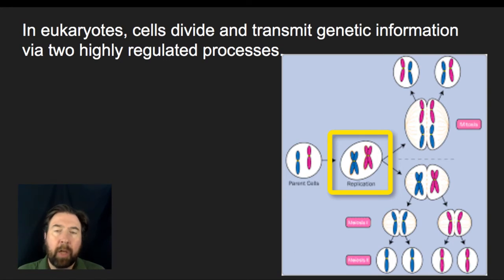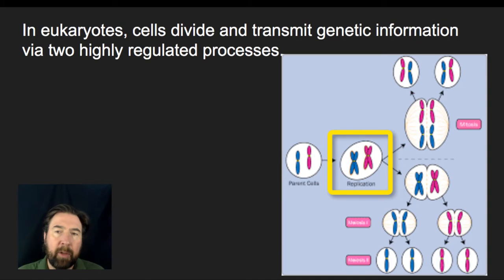Now it has two copies of the information of that red chromosome, each on a chromatid, and two copies of the information on that blue chromosome. Each of those two blue chromatids have the same information.